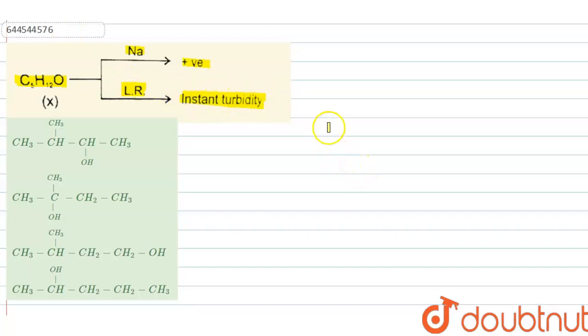Now we have to identify among the following options which one is our compound. C5H12O gives positive test with sodium, it means it is an alcohol.